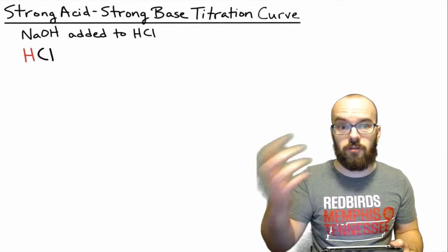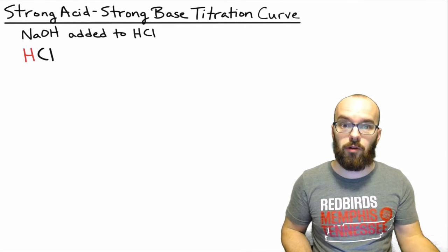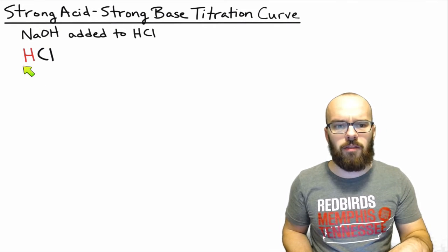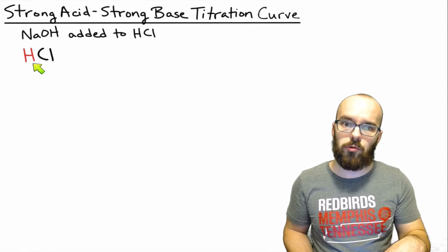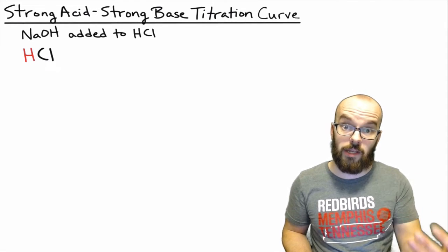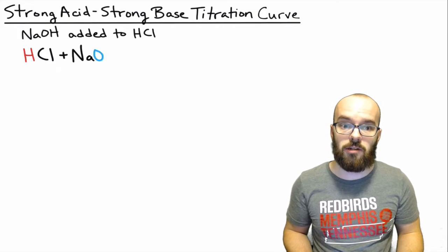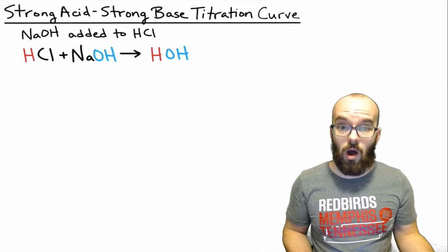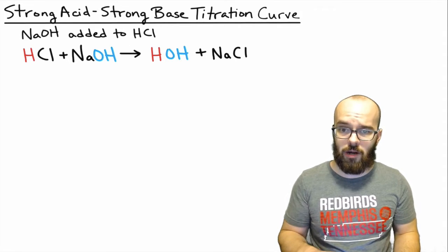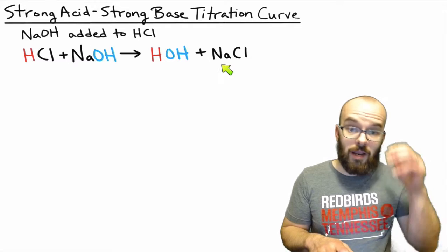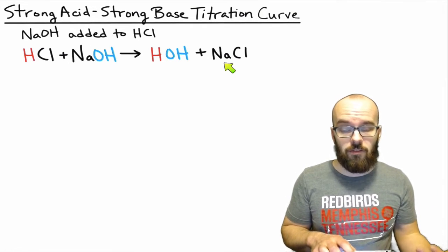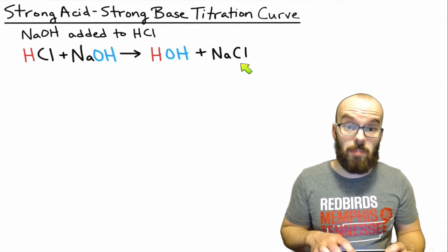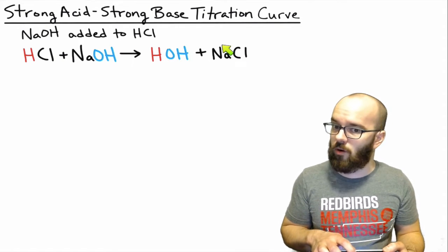Let's start by writing out the equation for the neutralization of hydrochloric acid with sodium hydroxide. I'm going to write out the acid and base ions in blue and red and the spectator ions in black so we can really look at the ions that are affecting the pH here. If we add sodium hydroxide to hydrochloric acid we know it's going to produce water plus sodium chloride. Sodium being the conjugate acid of a strong base and chloride being the conjugate base of a strong acid, those won't affect the pH.